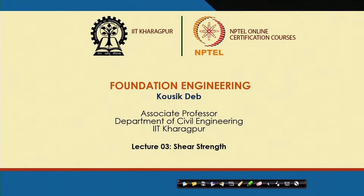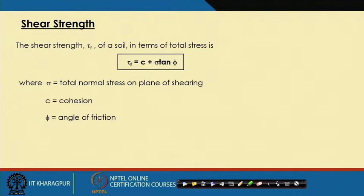Today I will start the third lecture which is on shear strength of soil. This shear strength of soil is very important for load carrying capacity calculation of foundation. The two major parameters — cohesion and friction angle of the soil — will be required for bearing capacity calculation. In this lecture I will discuss what tests we can use to determine these two shear strength parameters through laboratory. First we should know what is shear strength of a soil.